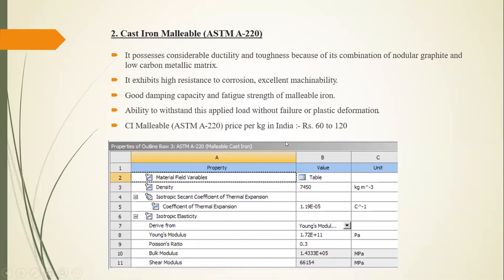The second material is malleable cast iron, ASTM A220 grade. Similar to ductile iron, it possesses considerable ductility and toughness because it is a combination of graphite and carbon in a metal matrix. Malleable cast iron exhibits high resistance, porosity resistance, and excellent malleability, making it easy to manufacture frontal axle components.